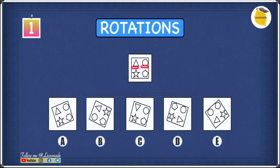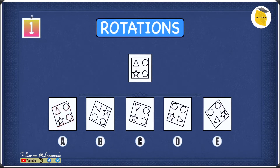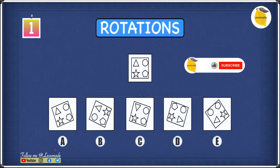If we find any of these four shapes different — different colour, a new shape introduced, or pointing in the wrong direction — we cross the option off. In option A, the pentagon is pointing away from the circle, but in the question figure the pentagon is pointing towards the circle. Since the pentagon is pointing in the wrong direction, we can cross off A.